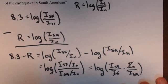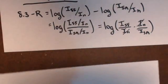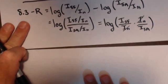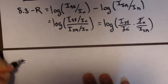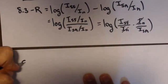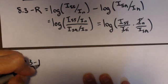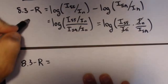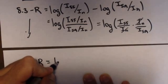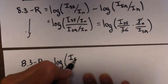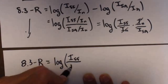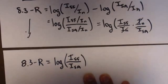Now, I'm going to need to grab myself another sheet of paper here. Let's see what happens when we take this a little bit further. So, I'm going to bring the left-hand side down. 8.3 minus R equals log, and we had that cancellation. So, inside the log, I have the intensity of the San Francisco over the intensity of the South American earthquakes.